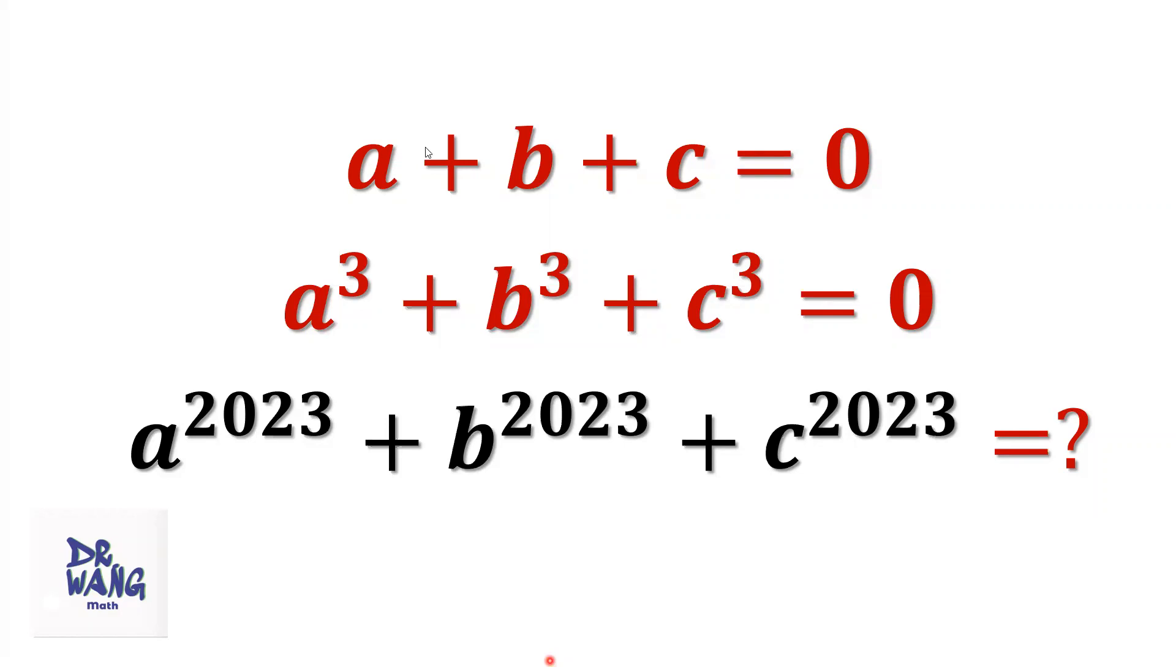If A plus B plus C equals 0, A to the power 3 plus B to the power 3 plus C to the power 3 equals 0, what is the value of A to the power 2023 plus B to the power 2023 plus C to the power 2023?